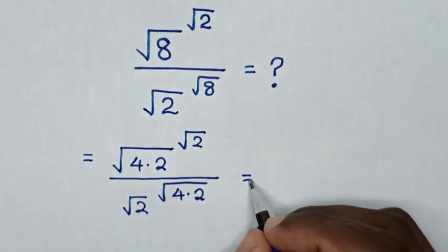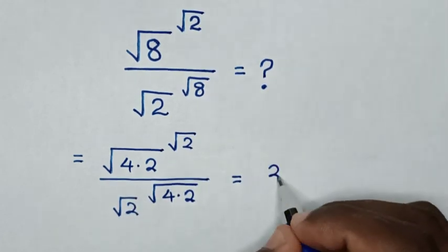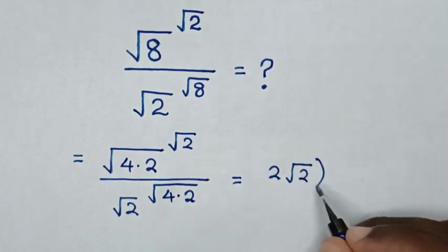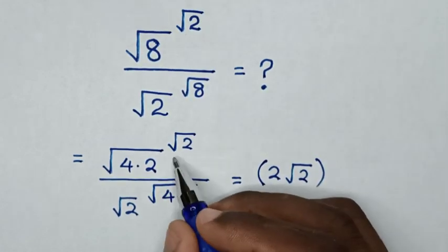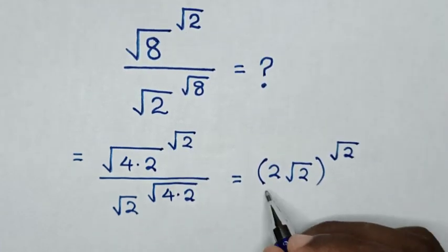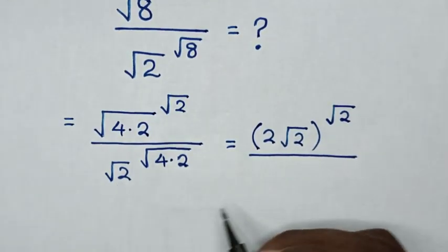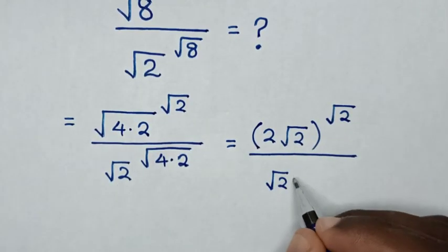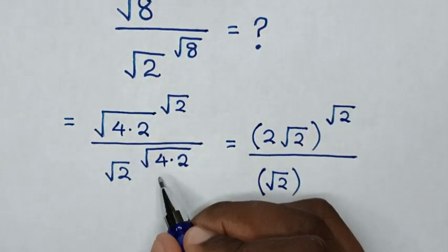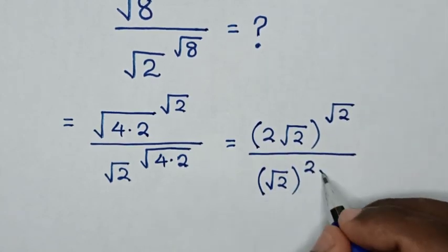It will be equal to square root of 4 is 2, then times square root of 2, then bracket, power of square root of 2 over square root of 2, bracket, then power of square root of 4 which is 2, then times square root of 2.